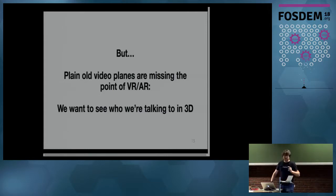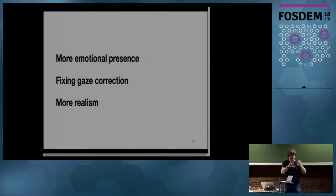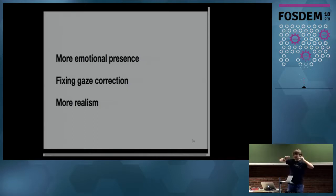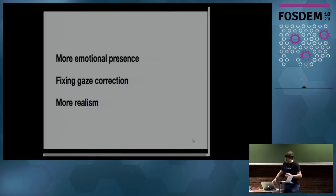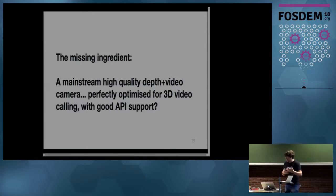Seeing people in 3D gives you a lot more presence in the emotional sense. It also allows you to fix gaze correction, which I think is a pretty big deal — when you're looking at somebody on a 2D video call, they're looking at the camera, whereas you're looking at them not looking at you. Your gaze never meets, and it causes a horrible emotional gap. Whereas if it were in 3D, you can position yourself until you're looking at them.